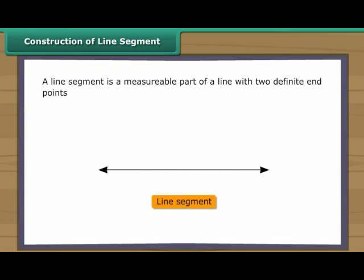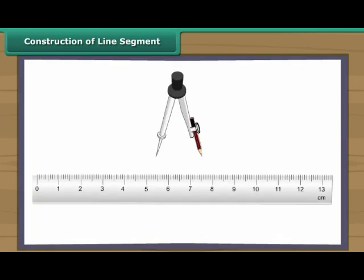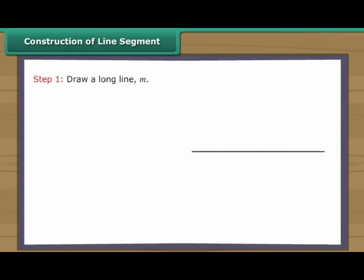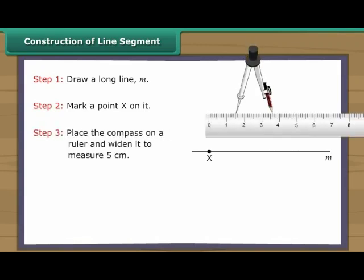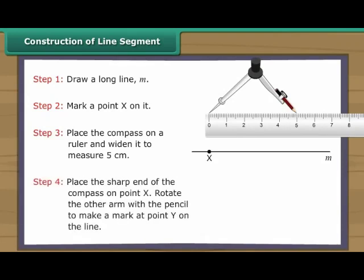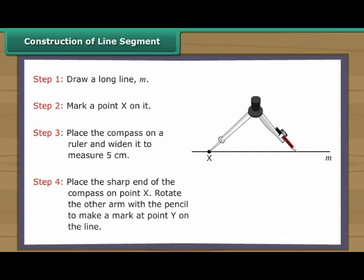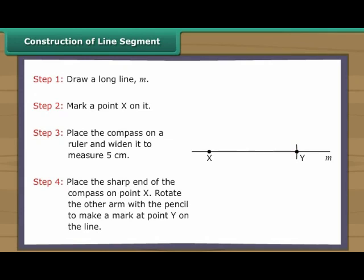Construction of line segment. A line segment is a measurable part of a line with two definite end points. We use a ruler and a compass to construct a line segment. Let us construct a line segment five centimetres long. Draw a long line M. Mark a point X on it. Place the compass on a ruler and widen it to measure five centimetres. Place the sharp end of the compass on point X. Rotate the other arm with the pencil to make a mark at point Y on the same line. We have a line segment XY which is five centimetres long.